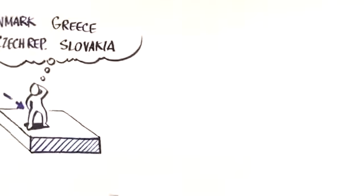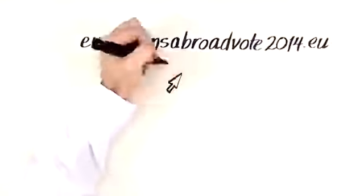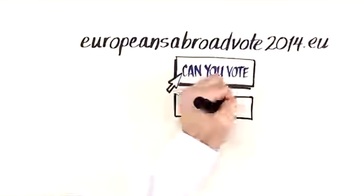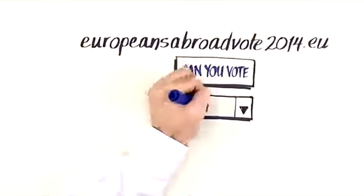So now there are two things you need to do. Visit our website, europeansabroadvote2014.eu. Click 'Can you vote?' and select the country where you're a citizen from to find out if you can vote and how to vote.